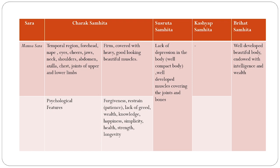The psychological features of Mansa Sara individuals include Kshama, Dhriti, Alobha, Vittam, Vidya, Sukha, Ajava, Arogya, Bala, Ayushya, Dirgha — that is, forgiveness, restraint, patience, lack of greed, wealth, knowledge, happiness, simplicity, health, strength, and longevity. Those endowed with these features are considered Mansa Sara individuals.